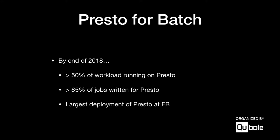By end of 2018, more than 50% of all batch workloads by data processed were running on Presto. 85% or more of all new workloads were being written against Presto, with the remainder split between Hive and Spark. Presto for batch workloads had become the biggest deployment at Facebook — growing that use case in roughly two years from a couple hundred machines to thousands of machines, about a 20x increase.